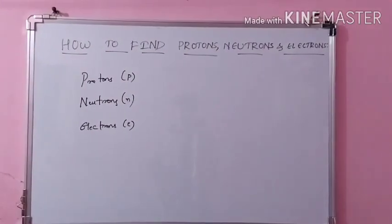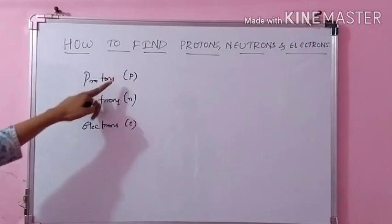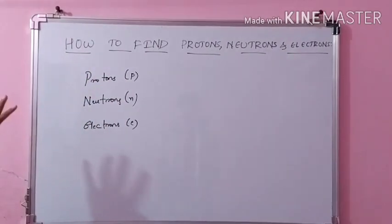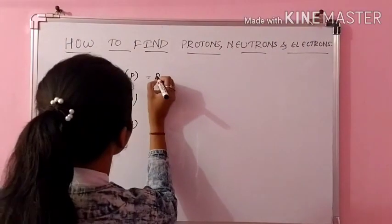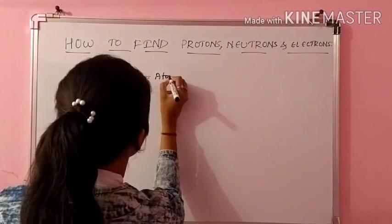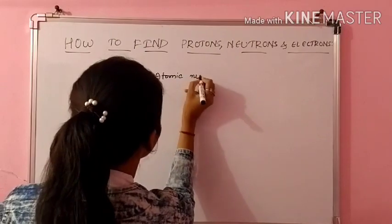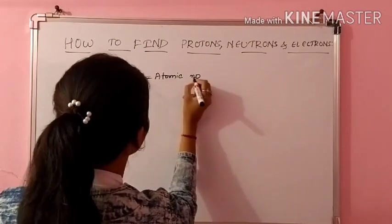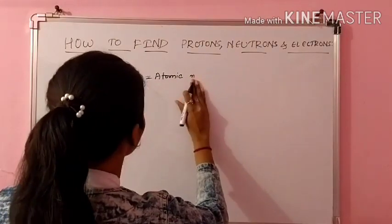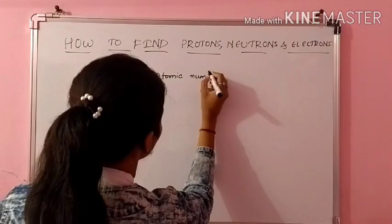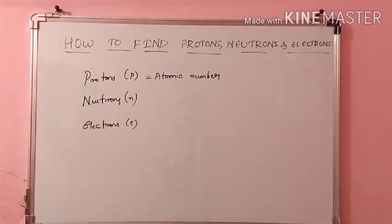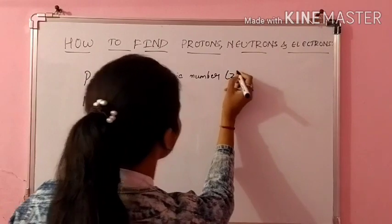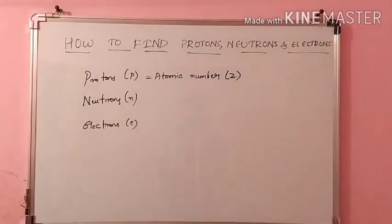First let us understand protons. Protons are nothing but the atomic number. So whatever the atomic number of an element is, that itself will be the number of protons. So protons is equal to atomic number. Atomic number is represented by Z.